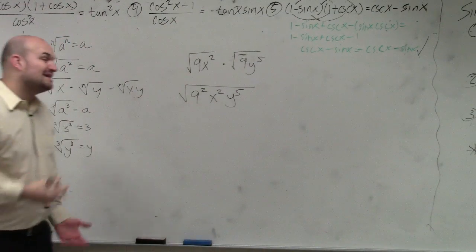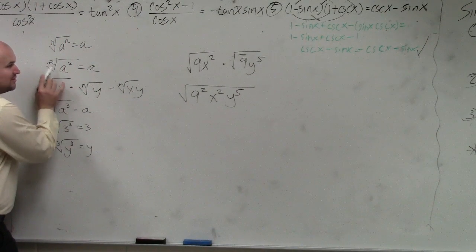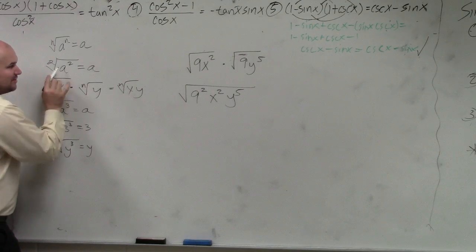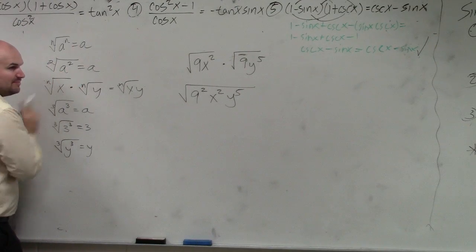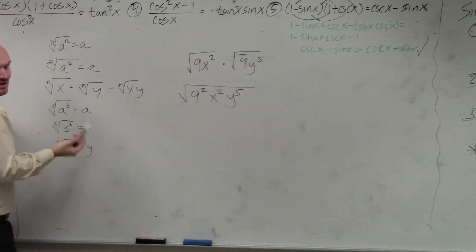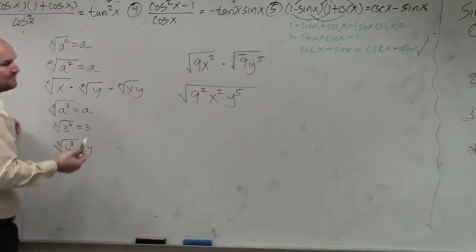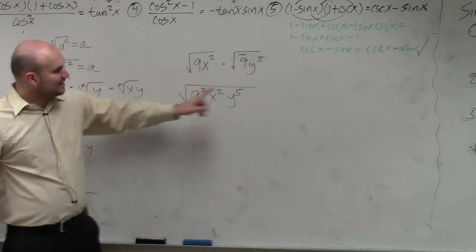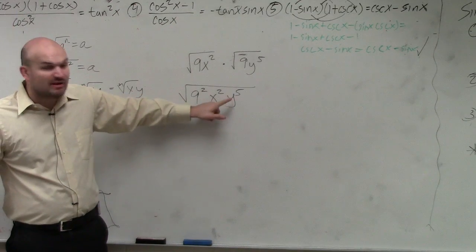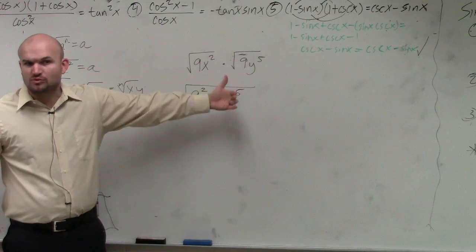Now, remember what the identity element tells us — especially for square roots — if I can rewrite all of my exponents as a number squared, I can simplify them. Well, I have 9 squared, so I can take the square root of that. I have x squared, I can take the square root of that. What I would recommend is we need to see: can we rewrite y to the fifth as terms squared?